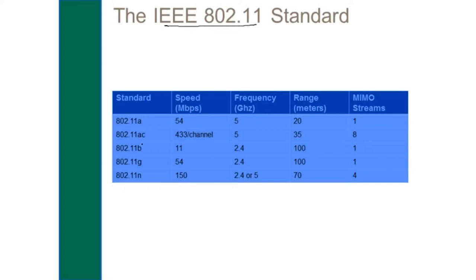One of the first wireless standards we adopted was 802.11b, which unfortunately was not as good as 802.11a if you measure good in throughput or data speed. The reason we adopted it, even though it only had 11 megabits per second, is because it worked on the ISM band — the industrial, scientific, and medical unlicensed frequency. Everybody already had radios for that band, so it was cheaper than buying new hardware for 802.11a, which operated in the 5 gigahertz range.